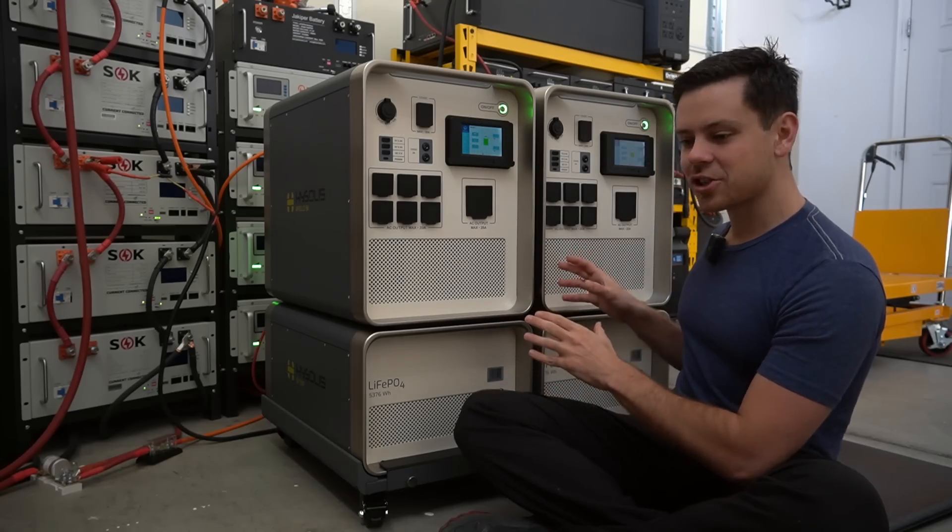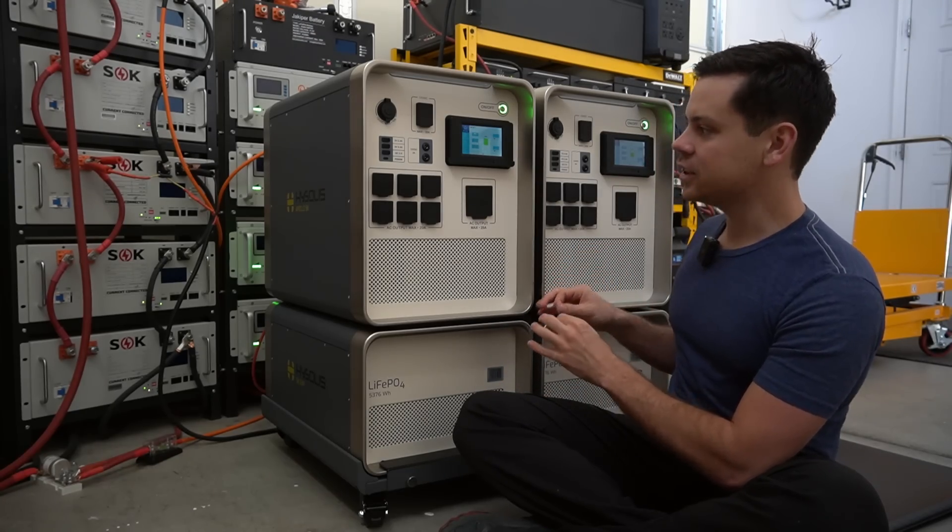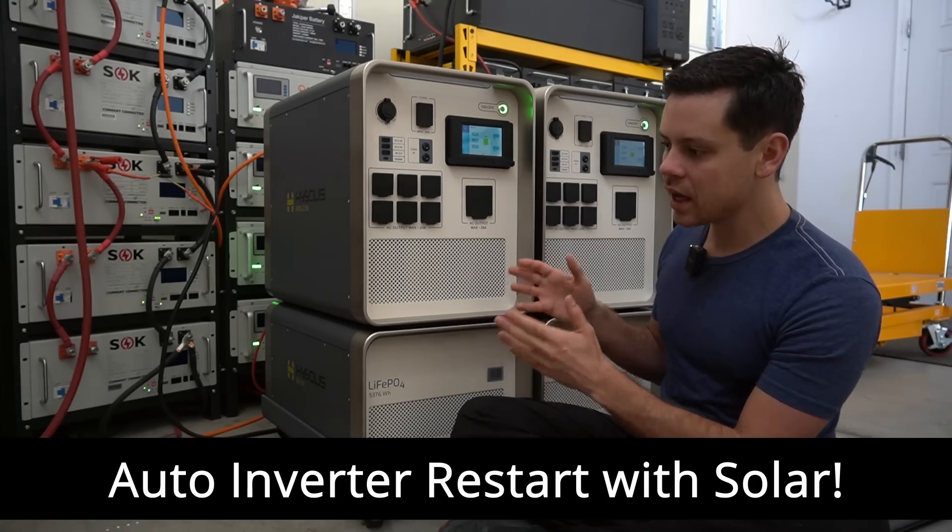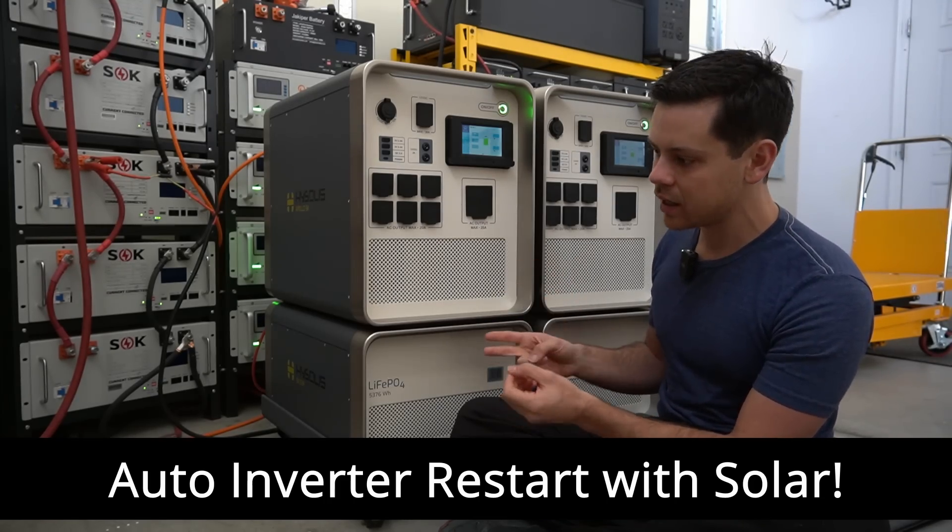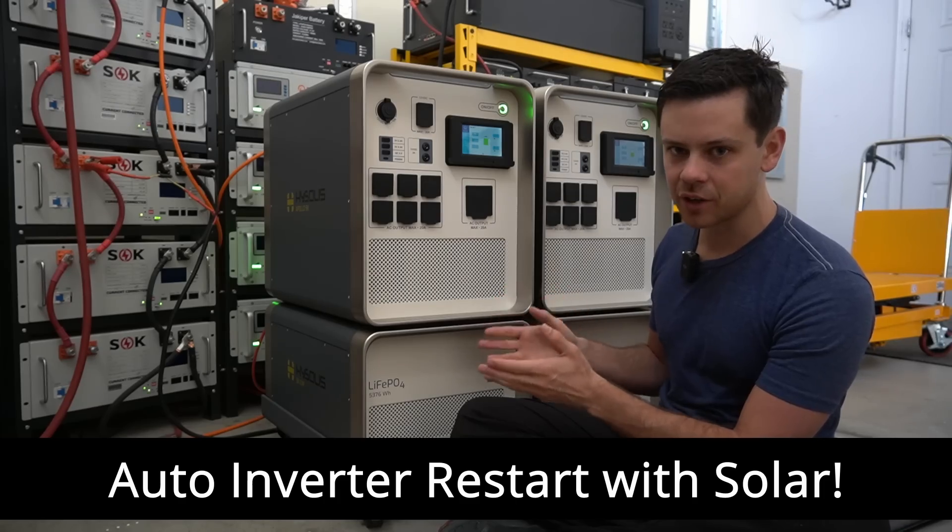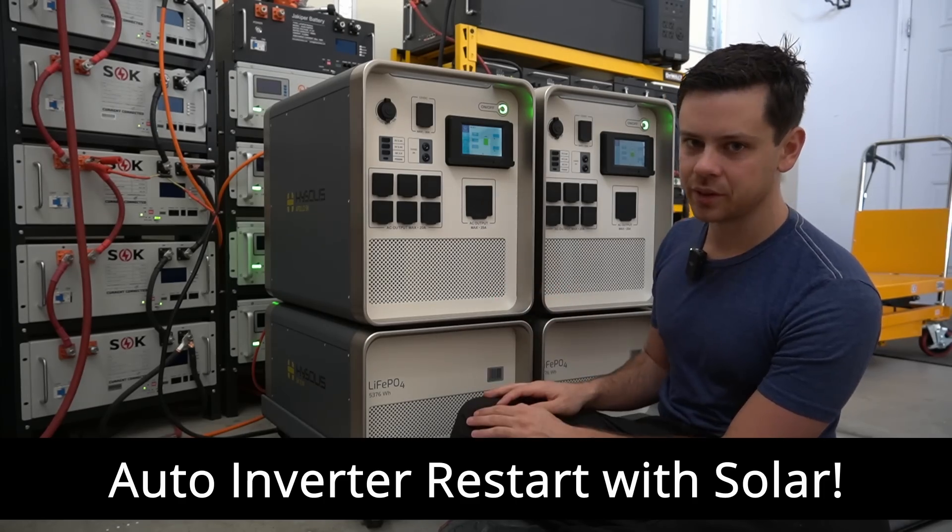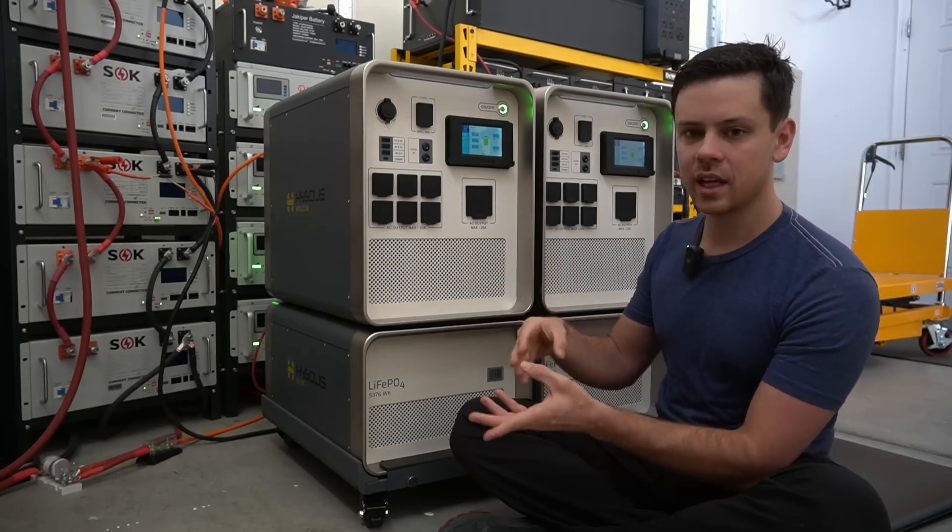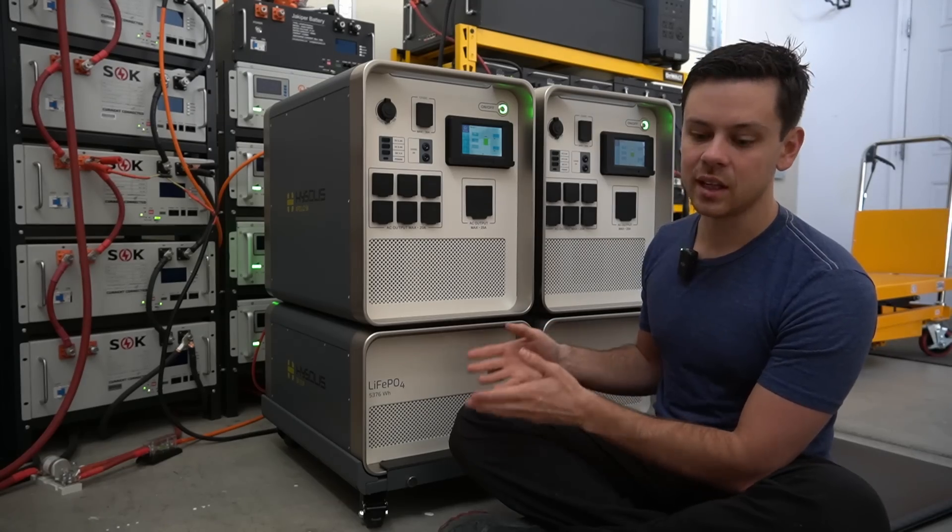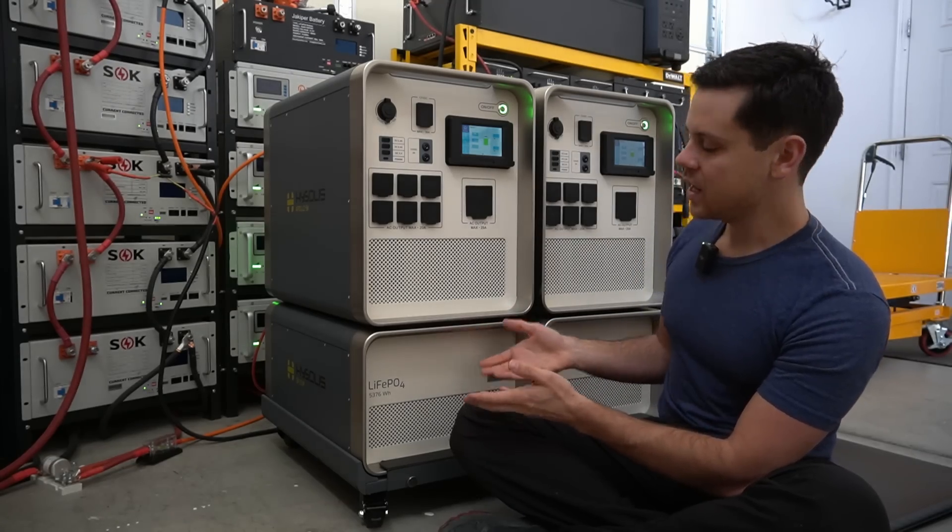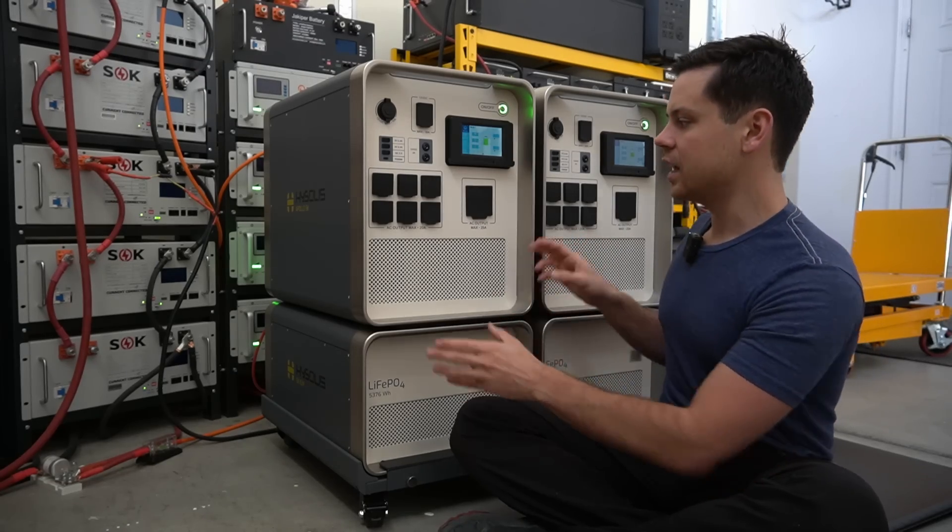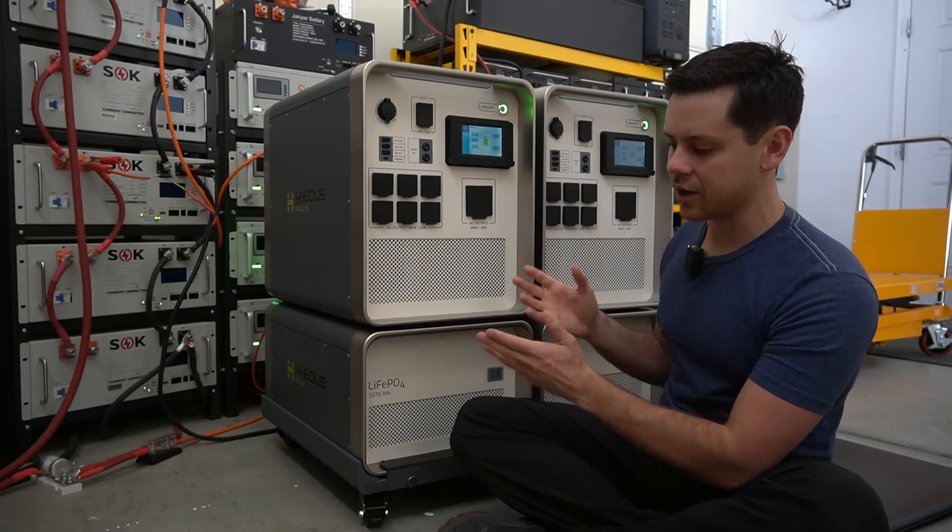Next special feature is this is the first unit on the market to turn the inverter on if solar power is available. All the others, EcoFlow Delta and Bluetti and everyone else, I've been telling them for years to do this, no one has been able to deliver. So if this has solar power in the morning it will turn the inverter back on if it was deeply discharged the night before. This is a basic feature for all off-grid solar power systems and this is the first power station that actually has that.